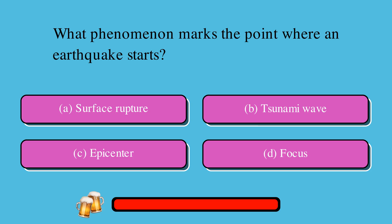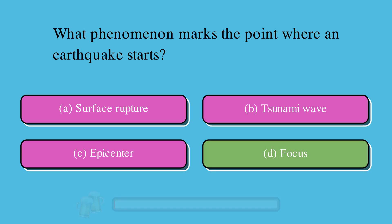What phenomenon marks the point where an earthquake starts? A. Surface rupture, or B. Tsunami wave, or C. Epicenter, or D. Focus? The correct answer is D. Focus.